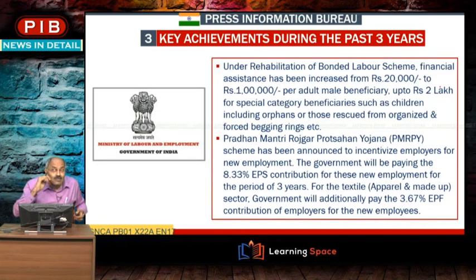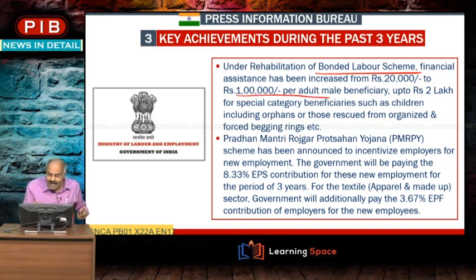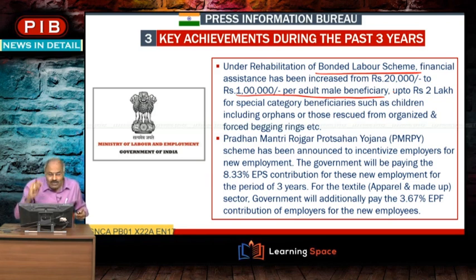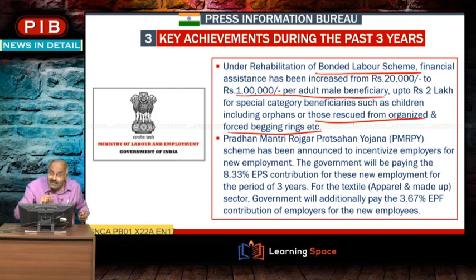Another important aspect is the Rehabilitation of Bonded Labour Scheme. Financial assistance for rehabilitation of bonded labour has been increased from Rs. 20,000 to Rs. 1 lakh per adult male beneficiary. For children including orphans or those rescued from forced begging rings, the rehabilitation package has been increased to Rs. 2 lakh.